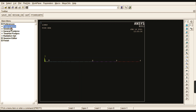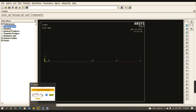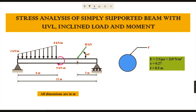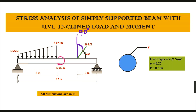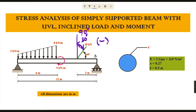Before applying boundary conditions, we are going to rotate one node because it carries an inclined load. We need to rotate this particular node by an angle. We know the inclined load is at 60 degrees, and in ANSYS we give the included angle — so 90 minus 60 equals 30 degrees. The sign convention in ANSYS requires a negative value, so we rotate the node by minus 30 degrees.